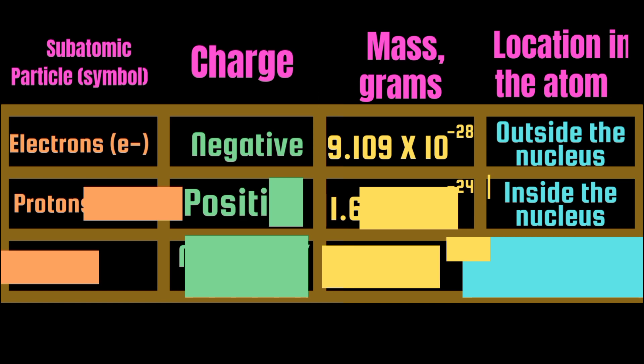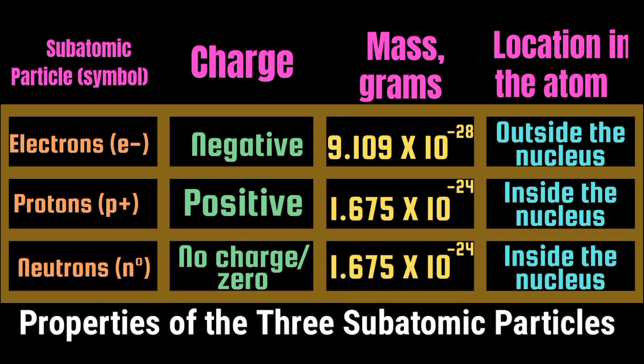This table shows some of the properties of the three subatomic particles. Electrons: Negative charge, located outside the nucleus. Protons: Positive charge, located inside the nucleus. And neutrons: No charge, located inside the nucleus.